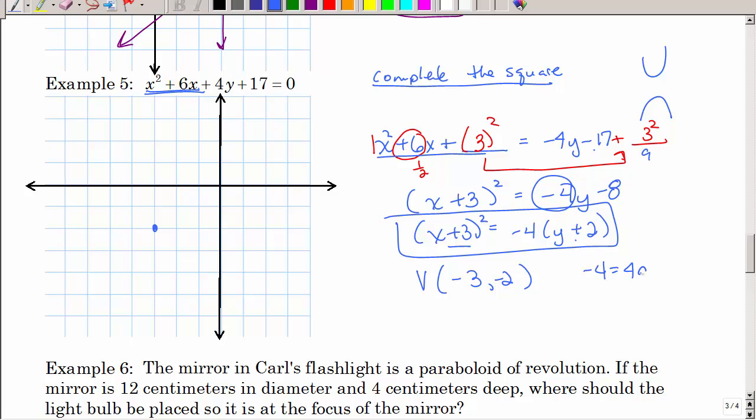Negative 4 is 4a, so a is negative 1. That negative tells you that you could go down or left. Since the x is squared and that's negative, I need to go down. So that's my vertex, that's my focus. What's that ordered pair? And if I went down for my focus, then I'm going to go up 1 for my directrix, and that's a vertical line.